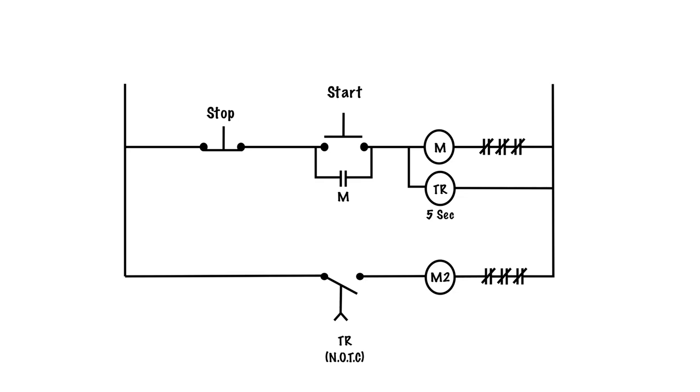Here we have a very simple circuit for sequencing. Let's say for some reason we don't want M coil and M2 coil to energize at the same time, meaning we don't want motor M to start at the same time M2 does. Perhaps there's too much inrush current. So we want M2 to start 5 seconds after M starts.